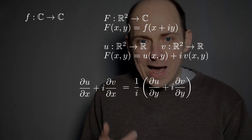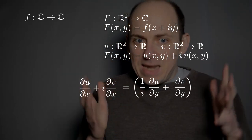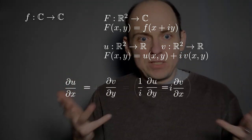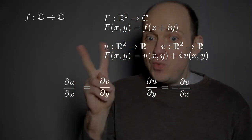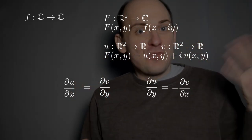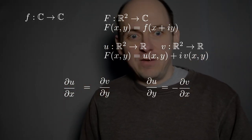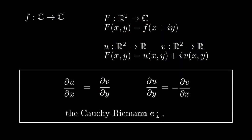Now I can distribute the 1/i, cancel the i over i, equate the real and imaginary parts of this equality, and then multiply the second equation by i. What I end up deducing are two equations relating the partial derivatives in the real and imaginary directions of the real and imaginary parts of little f. Our original question was what are the Cauchy-Riemann equations — and here they are. We started with holomorphic f, separated real and imaginary inputs and outputs, took the complex limit, recognized via multivariable calculus that the limit along the real and imaginary axes must match, and consequently obtained the Cauchy-Riemann equations.